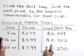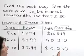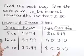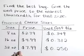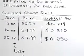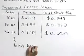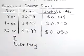So we can see that our best buy — this lowest unit cost — is for the 32 ounce item. So our best buy is 32 ounces for $7.99.